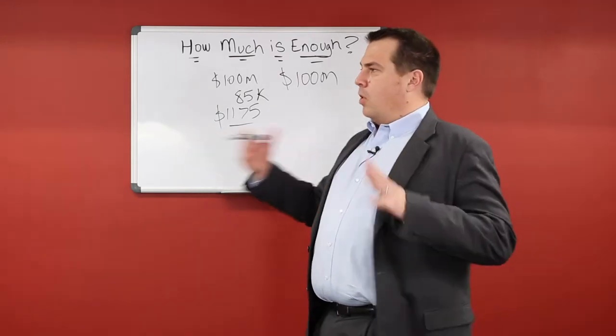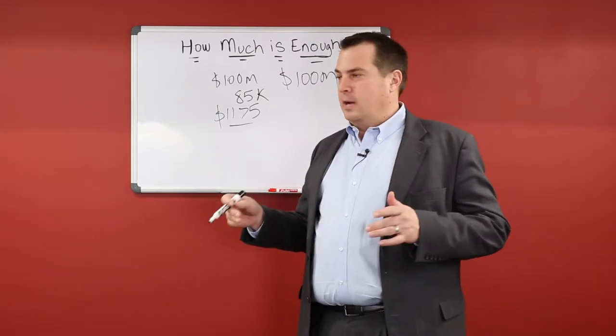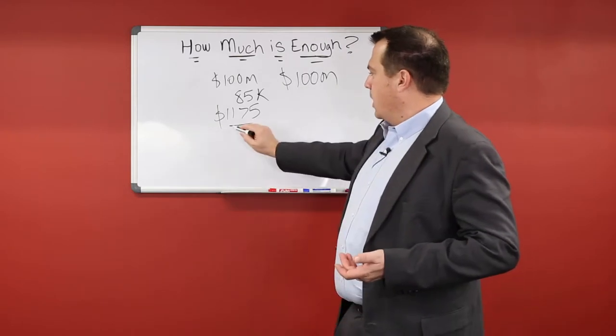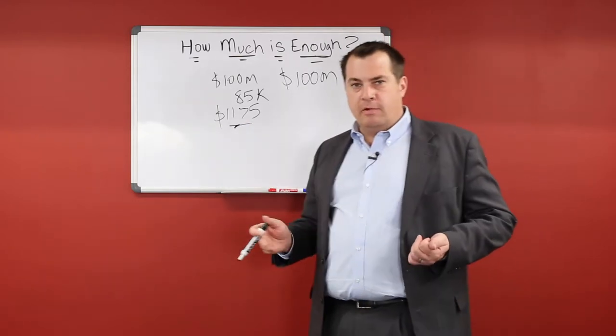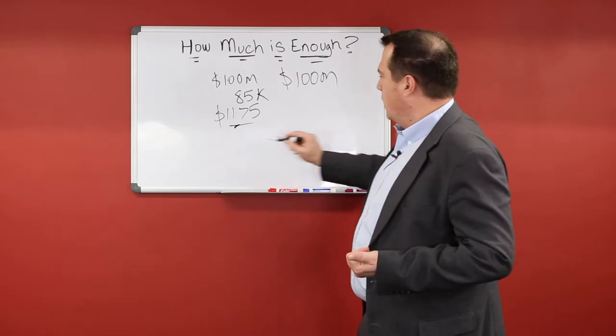But overall based on the total number of households, again you're looking at the same math here, eleven seventy-five per household over ten years for that as well.